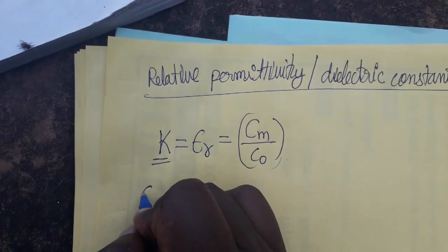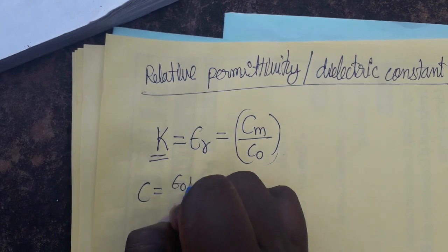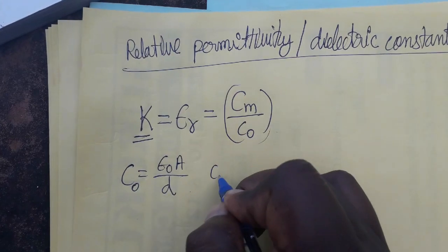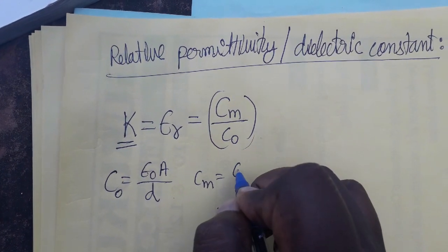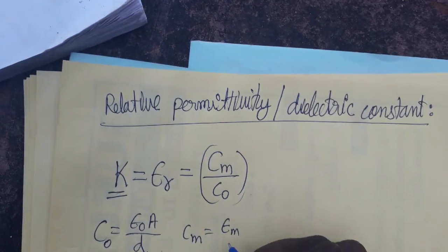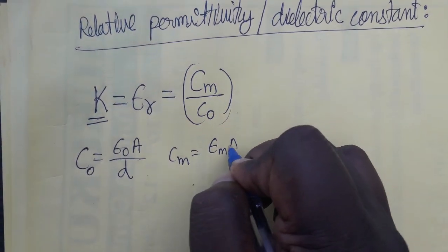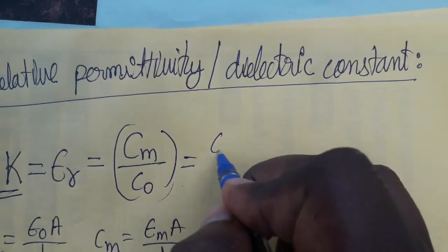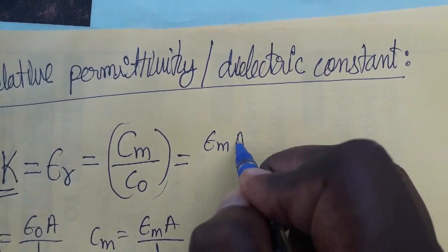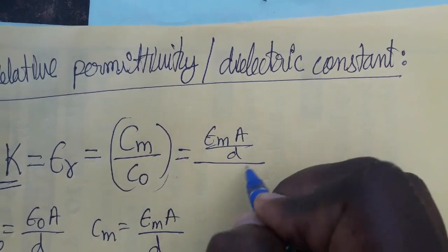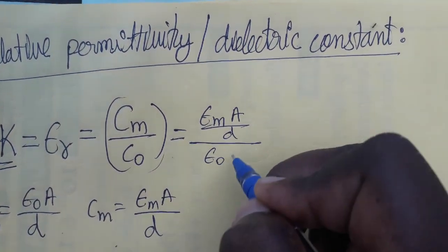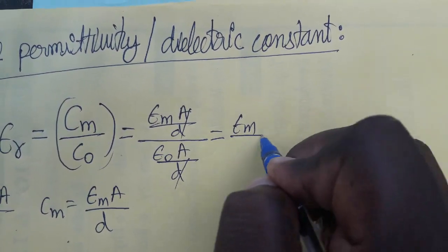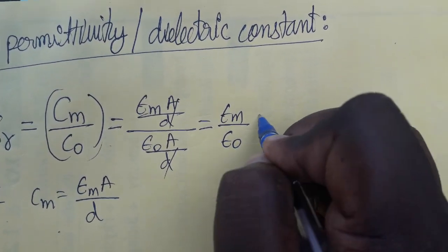The capacitance in air is C = ε₀A/d, and the capacitance in a medium is C = εₘA/d, where εₘ is the permittivity in the medium. Since area and thickness are the same, they cancel out, giving us dielectric constant k = εₘ / ε₀.